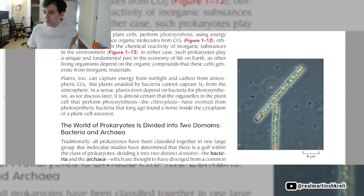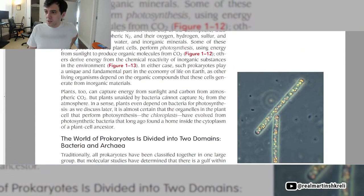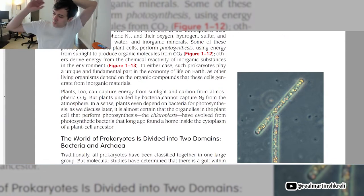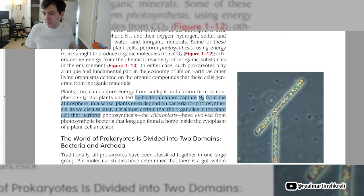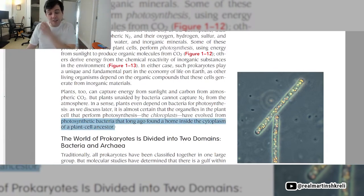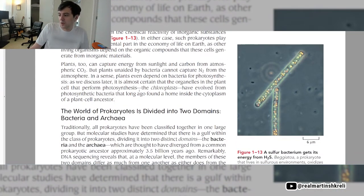If you're just joining us, we're going through a Harvard curriculum. The first class is biology, cell biology, and we're wrapping up chapter one. Then we're going to go to a different textbook and do class two of a curriculum of your average Harvard undergraduate student. Plants too can capture energy from sunlight and carbon from atmospheric CO2, but plants unaided by bacteria cannot capture nitrogen from the atmosphere. In a sense, plants even depend on bacteria for photosynthesis. As we discuss later, it is almost certain that the organelles of the plant cell that perform photosynthesis, the chloroplasts, have evolved from photosynthetic bacteria that long ago found a home inside the cytoplasm of a plant cell ancestor. So you'll see this concept of symbiosis occurring repeatedly.